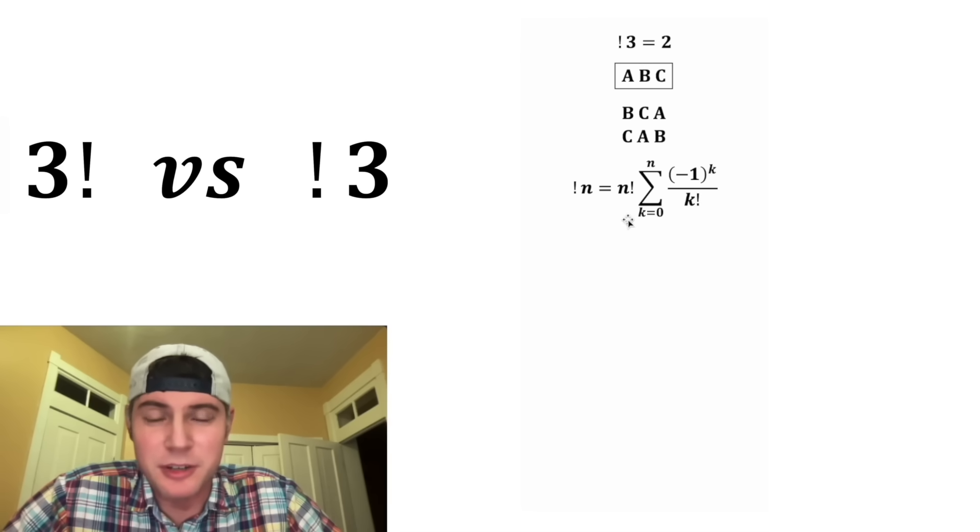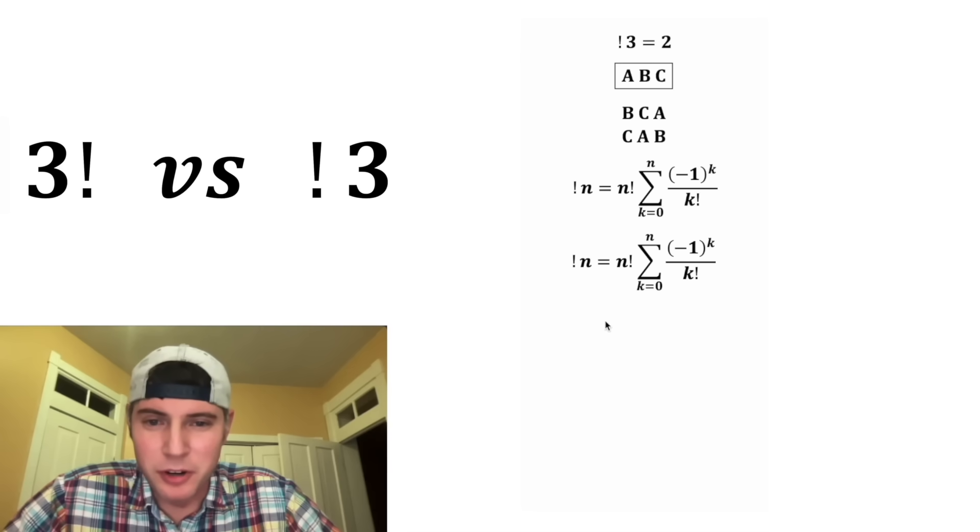It's saying that n subfactorial is equal to n factorial times this sum right here. So let's go through the work and find 3 subfactorial. So it's going to be equal to 3 factorial and this sum all the way from k equals 0 to 3.